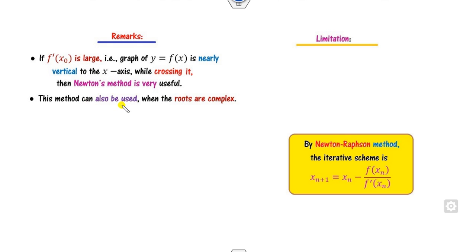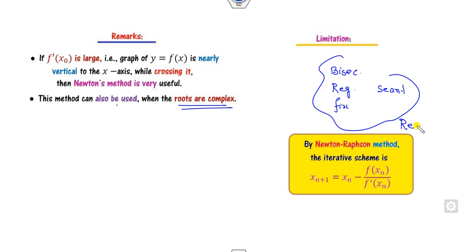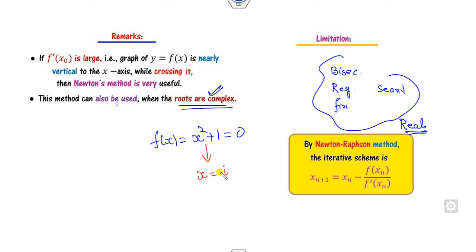On the other hand, this method is also used for complex numbers. The bisection method, regular falsi method, fixed point equation method, and secant method all work only for real roots. However, the Newton-Raphson method is also used for finding complex roots. For example, for x² + 1 = 0, the roots are ±i (complex numbers), and the Newton-Raphson method successfully handles this case.